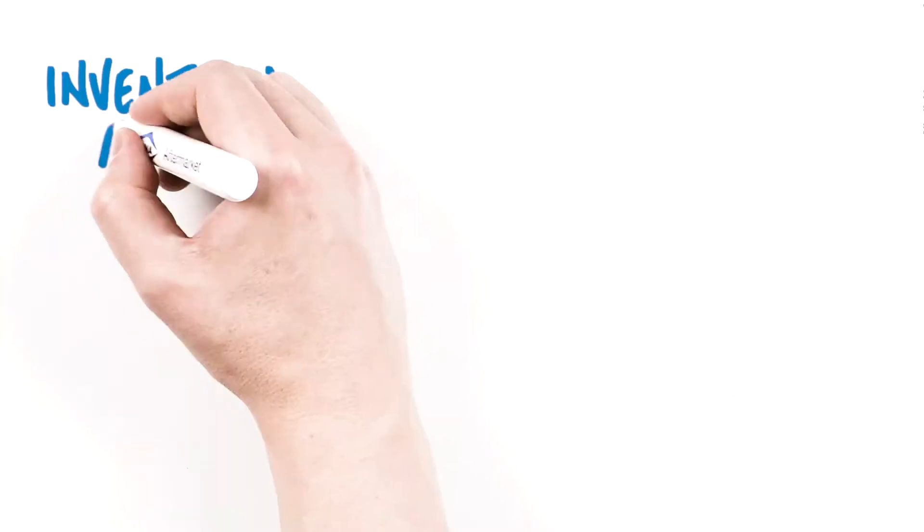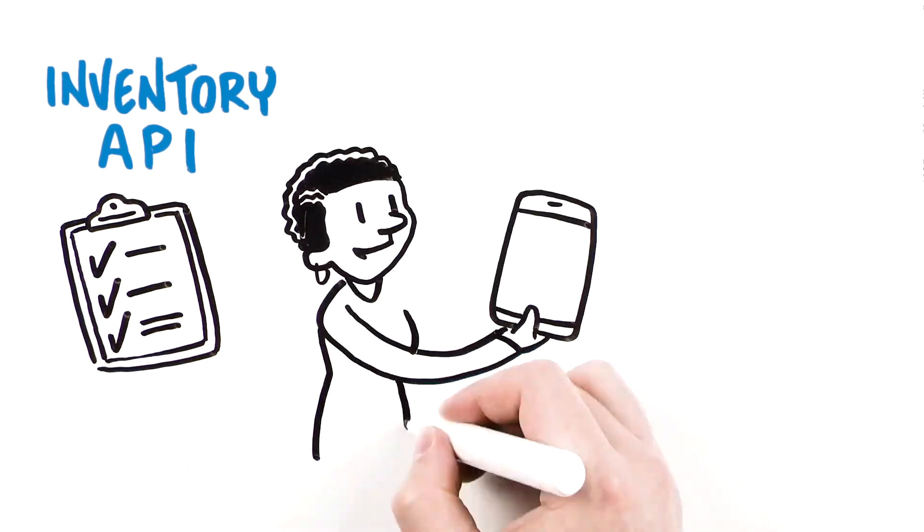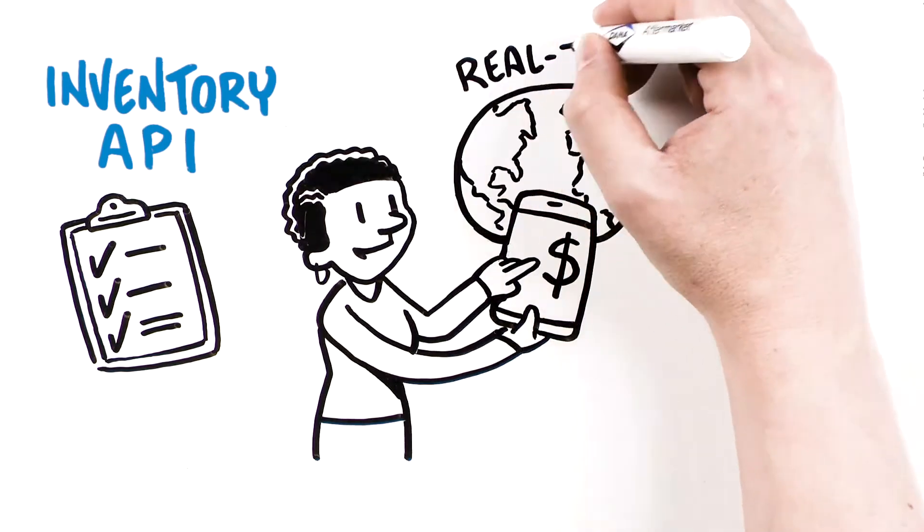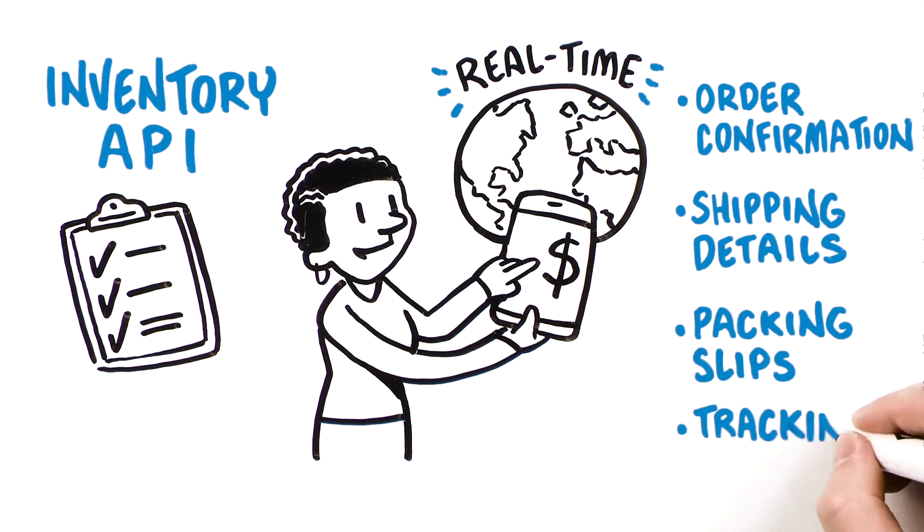And Dana's Inventory API displays SKU-level inventory availability from Dana's global distribution network in real-time. Wendy can quote a customer's business directly from her screen with confidence, and follow up with order confirmation, shipping details and packing slips, and tracking numbers.